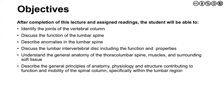Our objectives for today are as follows. We will be identifying the joints of the vertebral column and discussing the function of the lumbar spine as well as some anomalies of the lumbar spine. We'll be looking at the intervertebral disc as well as a general overview of the anatomy of the thoracolumbar spine. In order to do that, let's start with a general appreciation of the spinal column, the vertebral column.